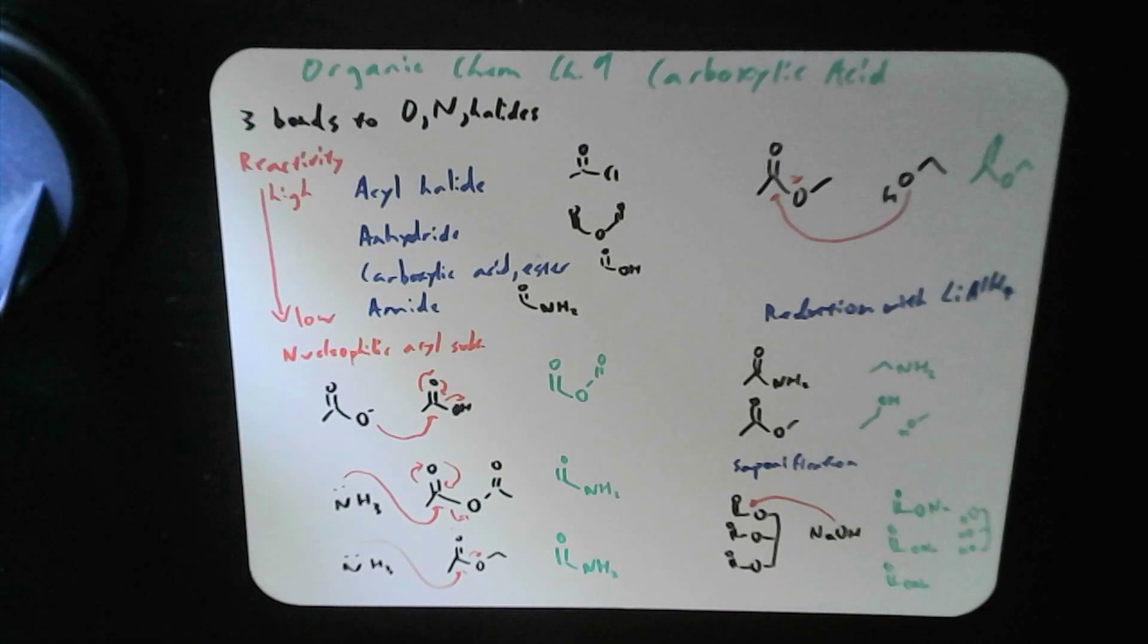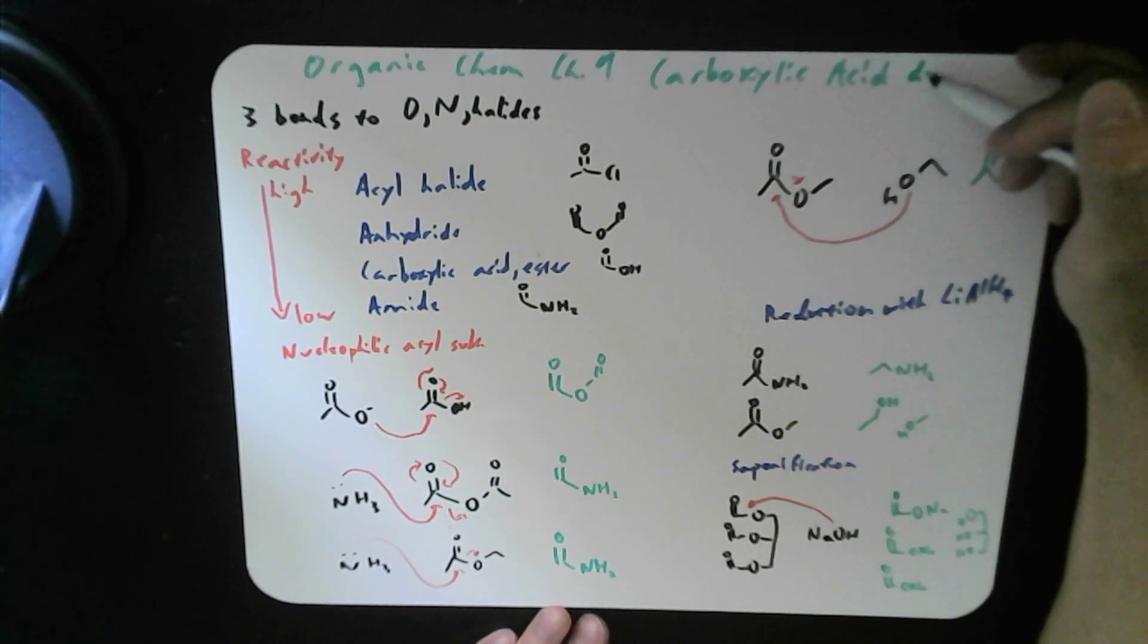Hello, welcome back to MCAT Grind. We have Organic Chem, Chapter 9, Carboxylic Acid. The derivatives of carboxylic acid, I'm just going to write it right here, derivatives.